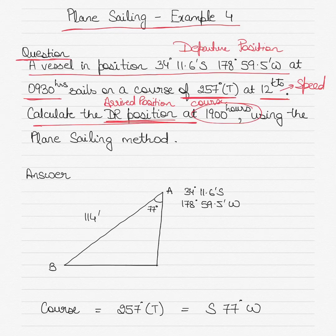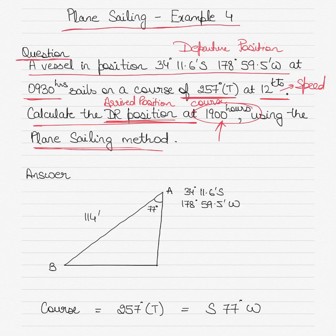The transit time is from 0930 to 1900 hours, and we have to calculate the arrived position using the plane sailing method. The first thing I would do is draw a rough diagram to get an idea of what kind of course the vessel is making.